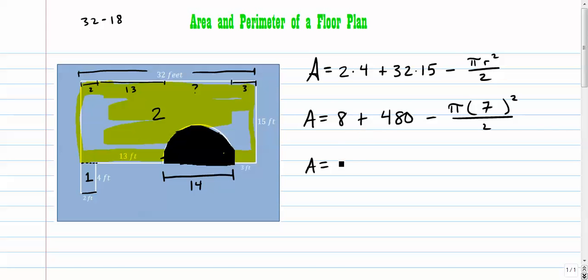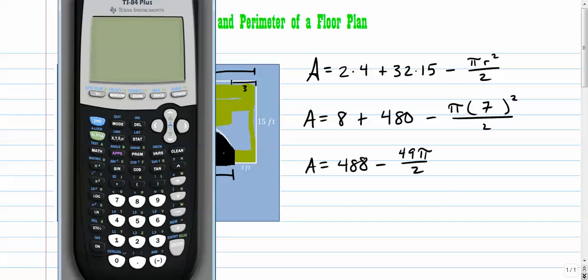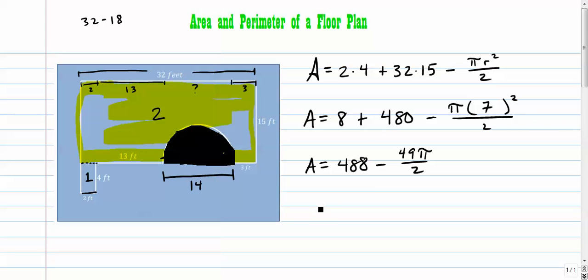So we're going to go area is equal to 488 minus 7 squared is 49 times pi over two. So we go to our calculator. We've got 488 minus 49 pi over two. Close parentheses. So 411.031 feet squared.